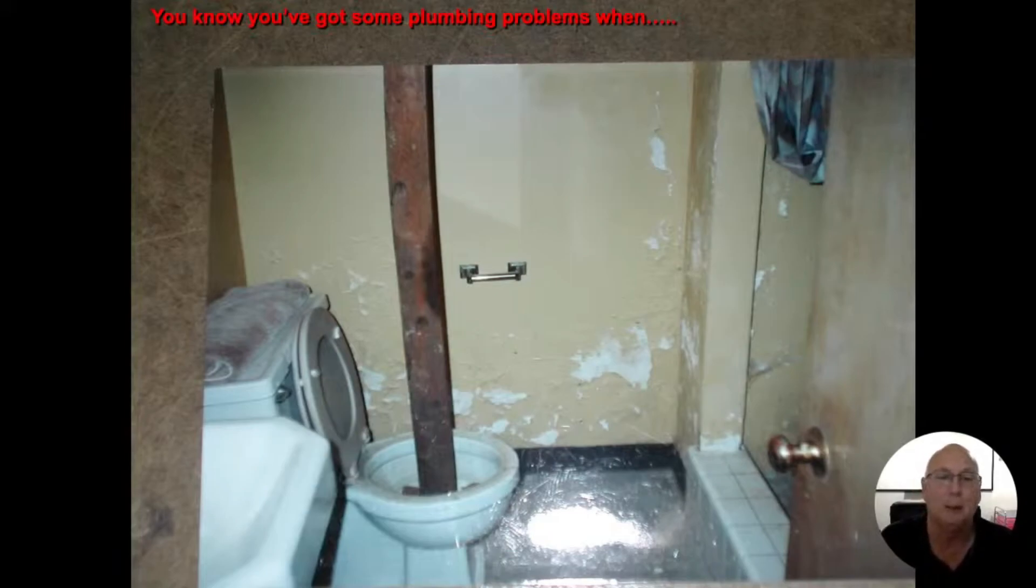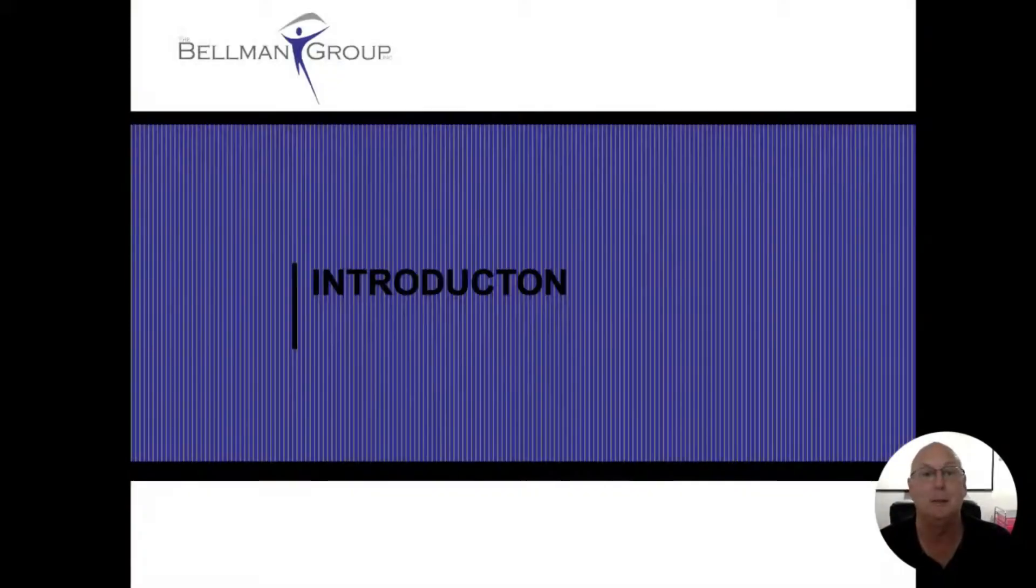Either the toilet was cracked, or for some reason they couldn't winterize it enough to keep the antifreeze in the toilet, so it kept leaking out. So somebody thought it was a good idea to take a rag and stuff it in the toilet and hold it nice and tight with a 2x4 in there. I'm sorry, I can't keep a straight face when I talk about it. I just think it's so ingenious. But in all reality, let's go ahead and get started.